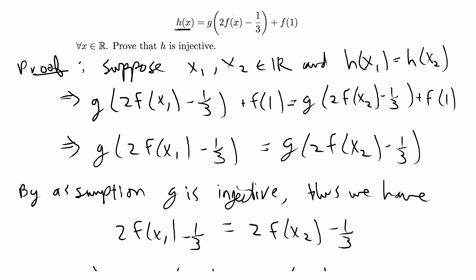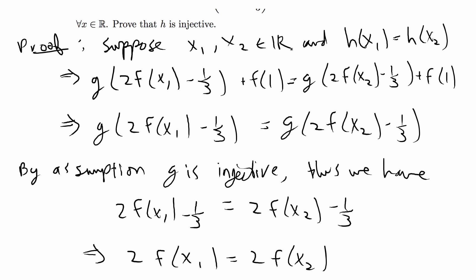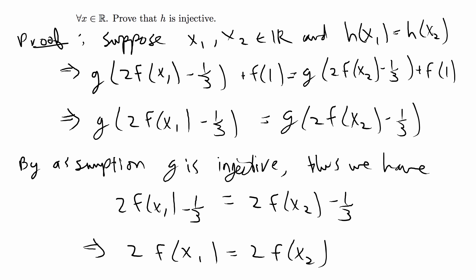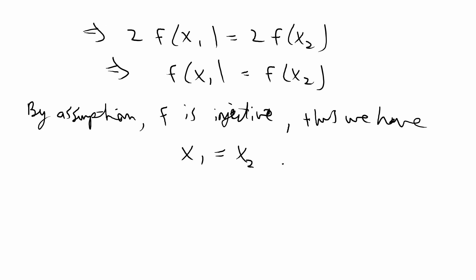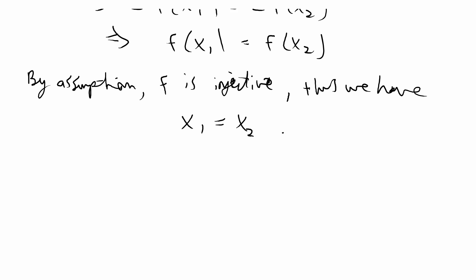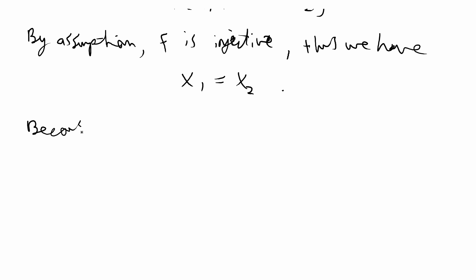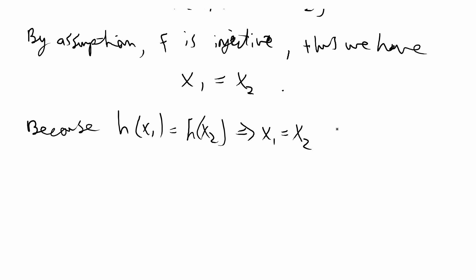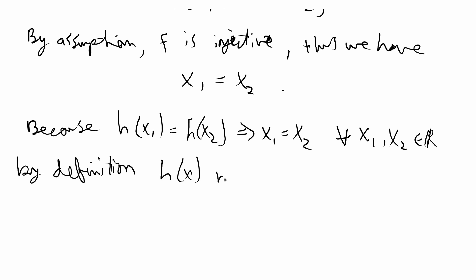Starting from the assumption that x1, x2 belong to R and h(x1) equals h(x2), we have shown that x1 equals x2. Therefore h of x must be injective. Because h(x1) equals h(x2) implies x1 equals x2 for any x1, x2 in R, by definition h of x is injective. And we're done with this proof.